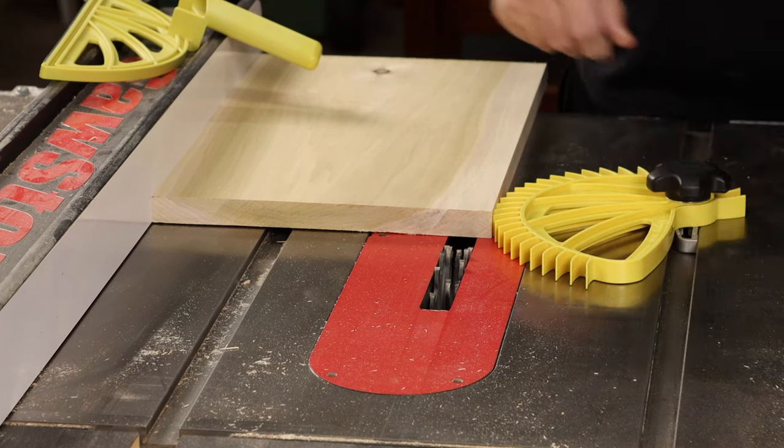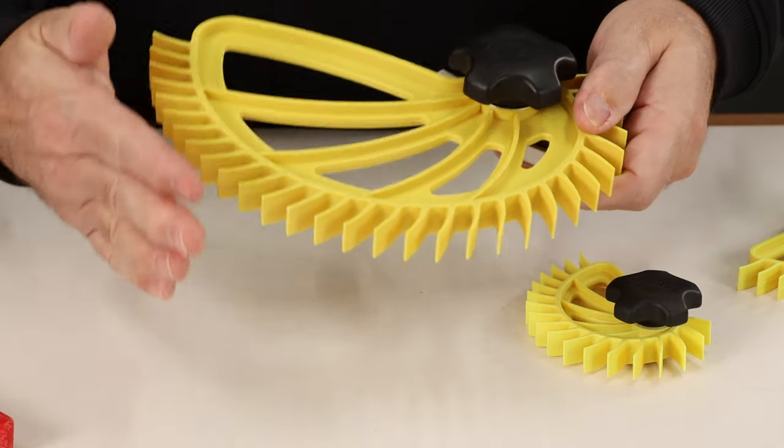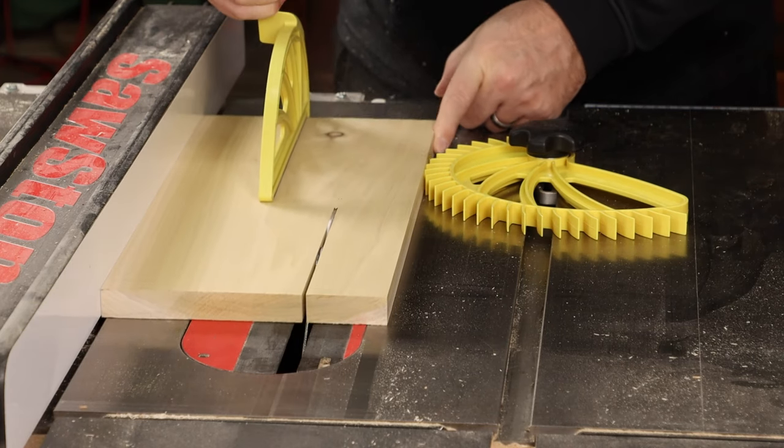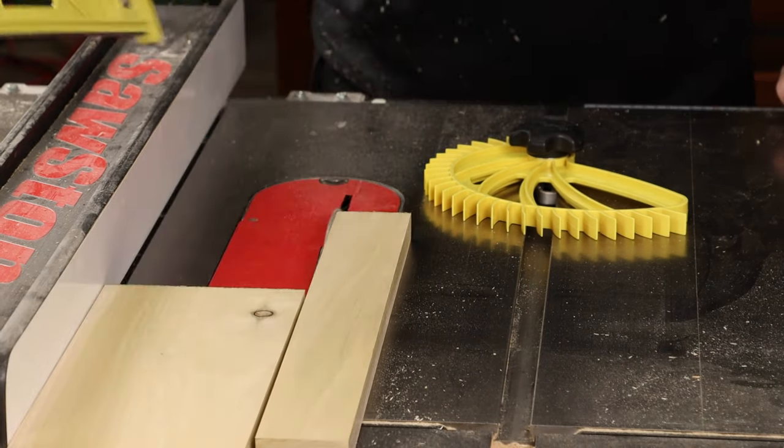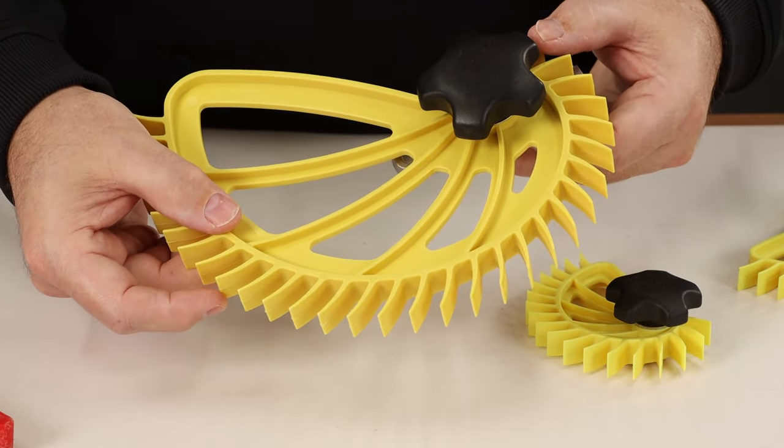The fingers on this are stiffer than most feather boards I've used and I think that makes sense because it's not flat. You don't have the whole thing in contact with the workpiece, but just a couple feathers at a time, so it makes sense to have those a little bit stiffer and apply more pressure.